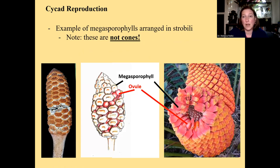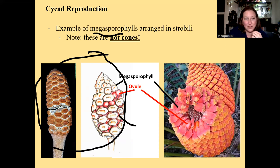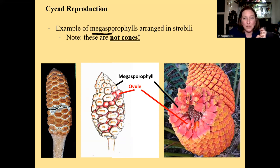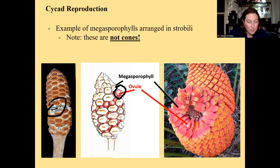Here's an actual example of megasporophylls arranged in a strobilus. On this species, the megasporophylls kind of look like oyster crackers — those crackers you put in soup. Each of those little brown things is a megasporophyll, and on each megasporophyll there is an ovule, shown in red here. In the right picture, the megasporophylls are kind of red and orange, and on each megasporophyll there will be an ovule.